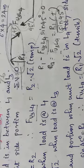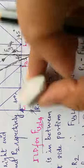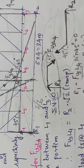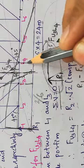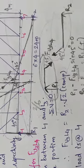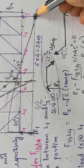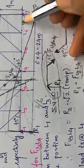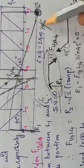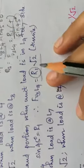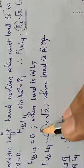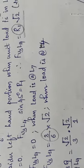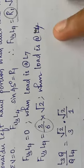Drawing the influence line diagram for R1: at L7 the ordinate is 0, at L4 the ordinate is 3/6. So the ILD value for U3L4 at L4 is (3/6) × √2. The ILD spans L1 to L7 on the bottom chord where the load travels. At L3 the value simplifies to √2/3, and at L4 it is 1/√2.